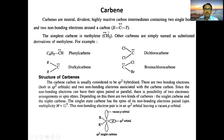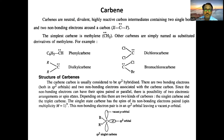On the basis of the spin of these two non-bonding electrons, carbenes are called singlet carbene or triplet carbene. Spin multiplicity equals 2s + 1. If both electrons have the same spin, s = 1/2 + 1/2 = 1, so spin multiplicity = 2(1) + 1 = 3. Therefore, when both electrons have the same spin, the carbene is called triplet carbene.